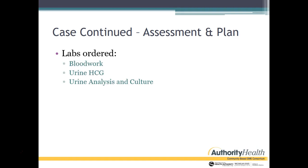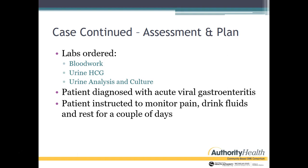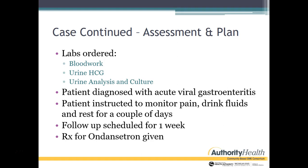So here's our assessment and plan. We're going to order some blood work, a urine culture, and a UA. The MA draws the blood, a urine dip is done in the lab, and the UA comes back negative. So you send the culture and the blood work and diagnose her with acute viral gastroenteritis. She's instructed to monitor her pain, drink fluids, and rest for a couple of days. Follow-up is scheduled for one week and she's given Zofran for nausea.